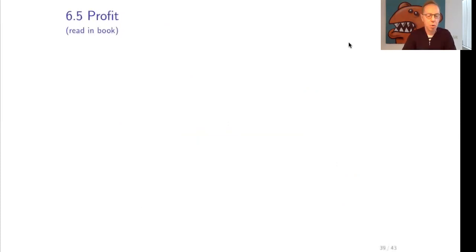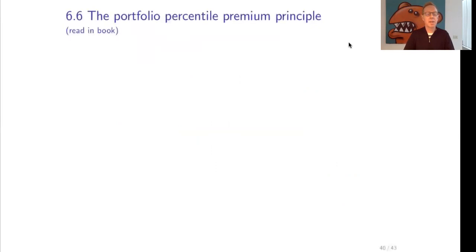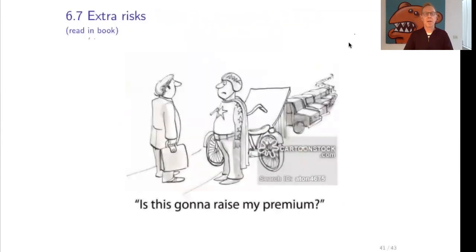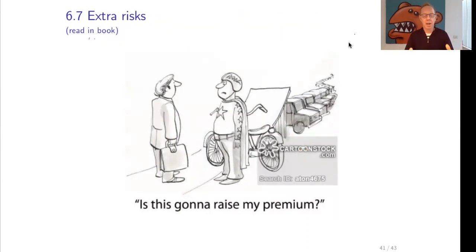A note on exam scope: the section on profit should be read in the book but will not be part of the exam material. Section 6.6 on the portfolio percentile premium principle is also interesting to read but will not be on the exam. Section 6.7 on extra risks — how premiums are increased for non-standard mortality risks — should also be read in the book, but it is likewise not part of the exam material.